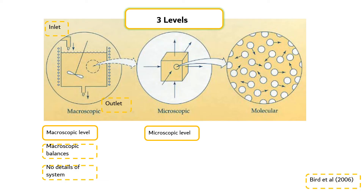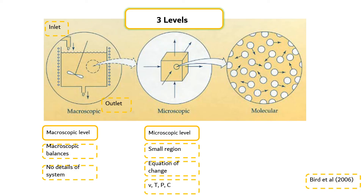At the microscopic level, we examine what is happening to the fluid mixture in small regions within the equipment. A set of equations called the equations of change describe how the mass, momentum, and energy change within this small region. The aim here is to get information about velocity, temperature, pressure, and concentration profiles within the system. This more detailed information may be required for the understanding of some processes.